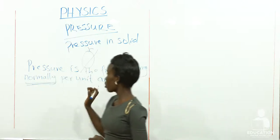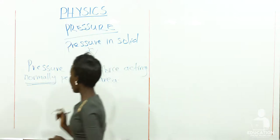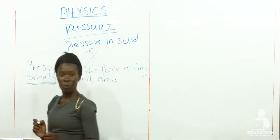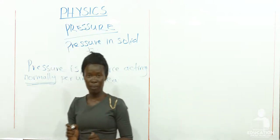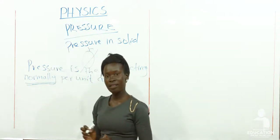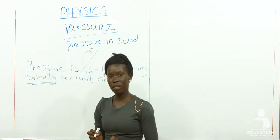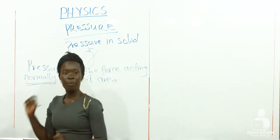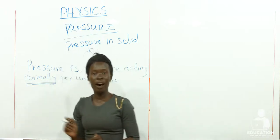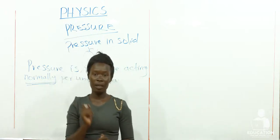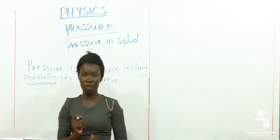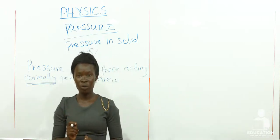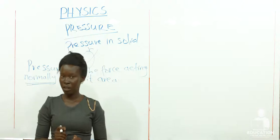Pressure is a scalar quantity. Why is it a scalar quantity? This is because pressure has only magnitude without direction.